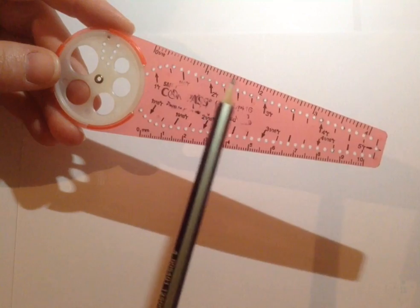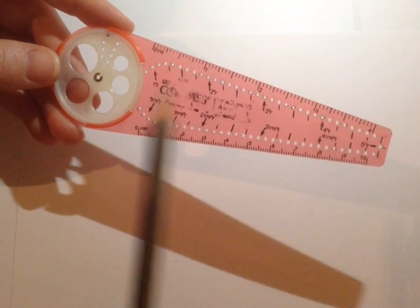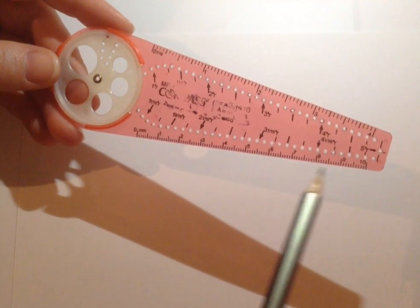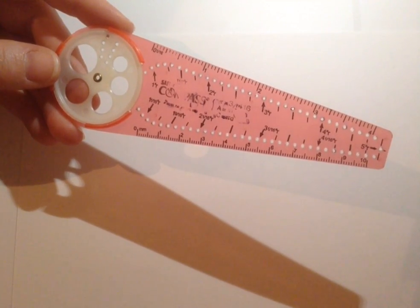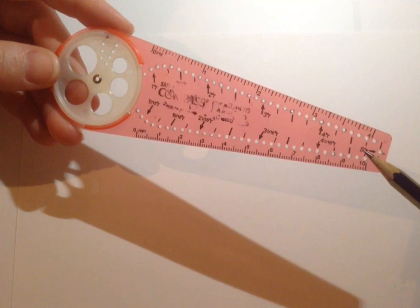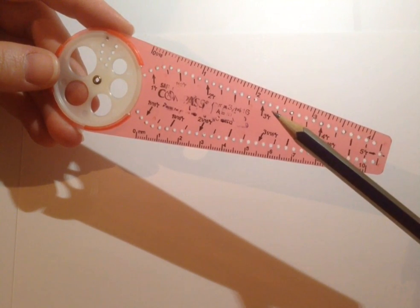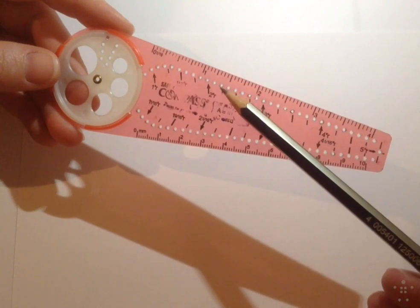You have a ruler up here along this edge, and this is the inch side. You have a ruler along this side which is the centimeter side, and then in here you have some pre-determined markings that can show you how to get a certain size circle that you're looking for.